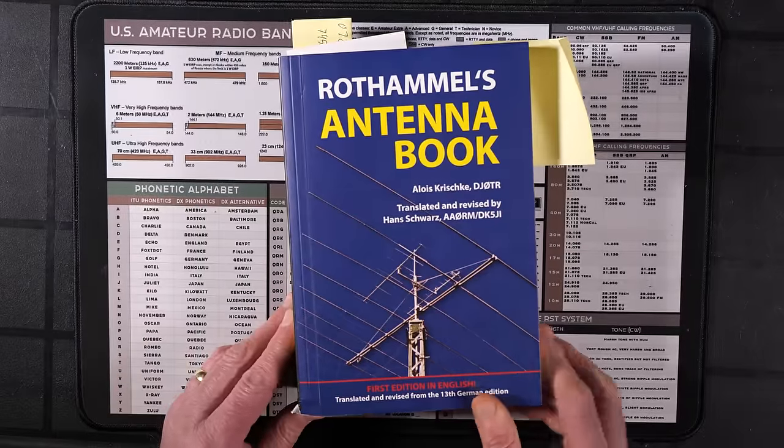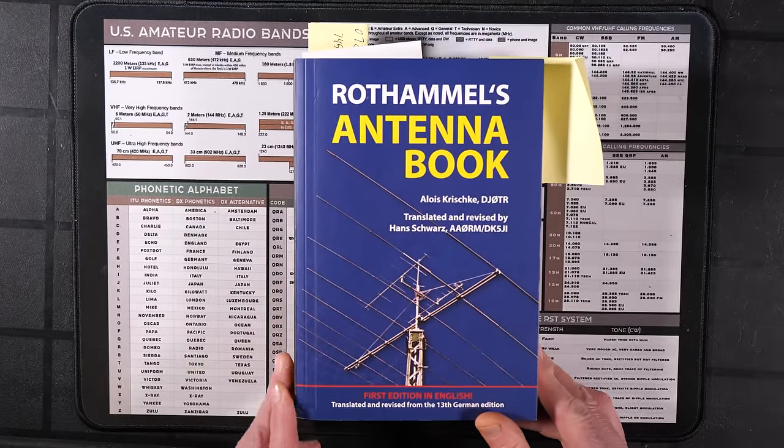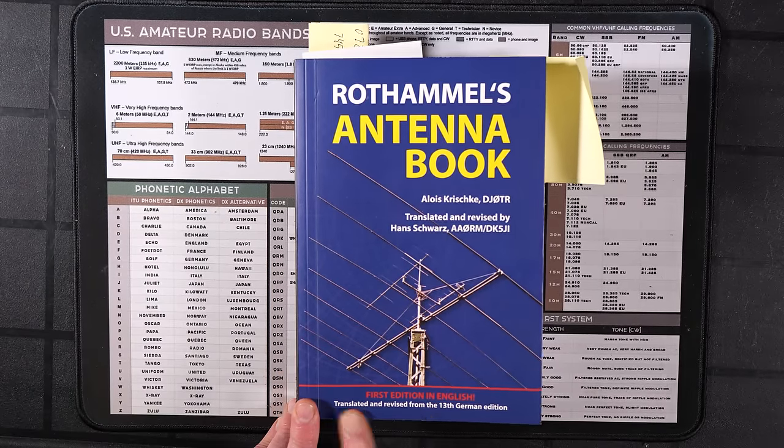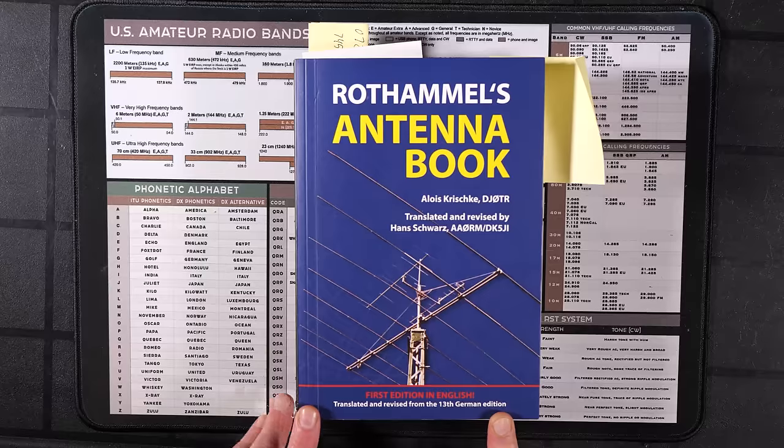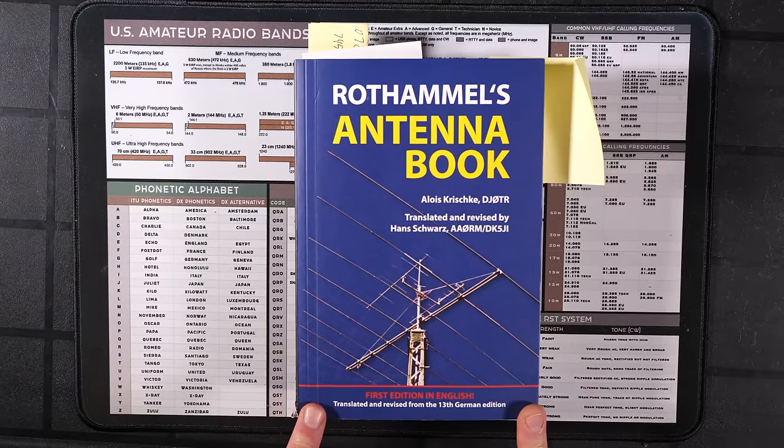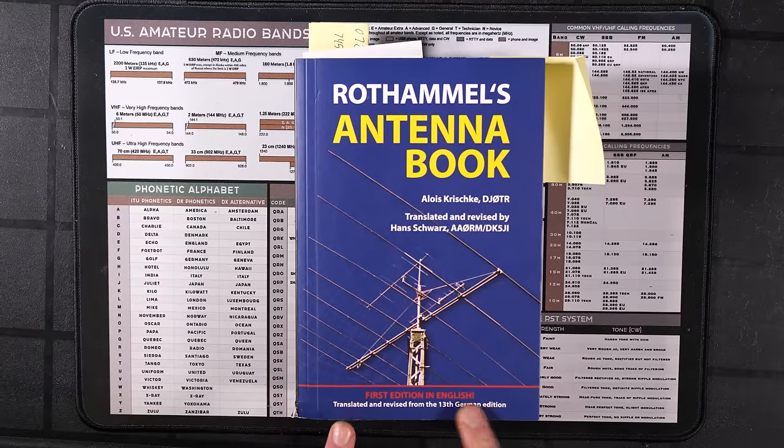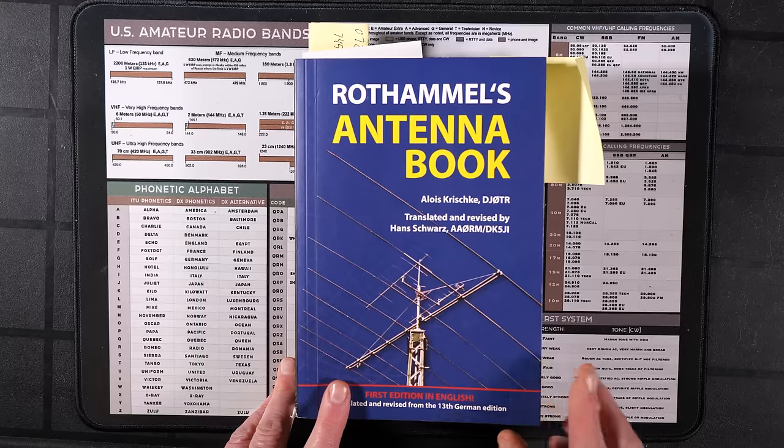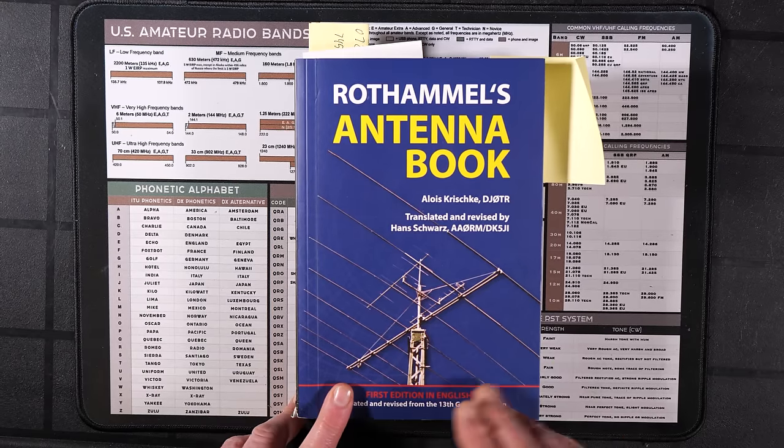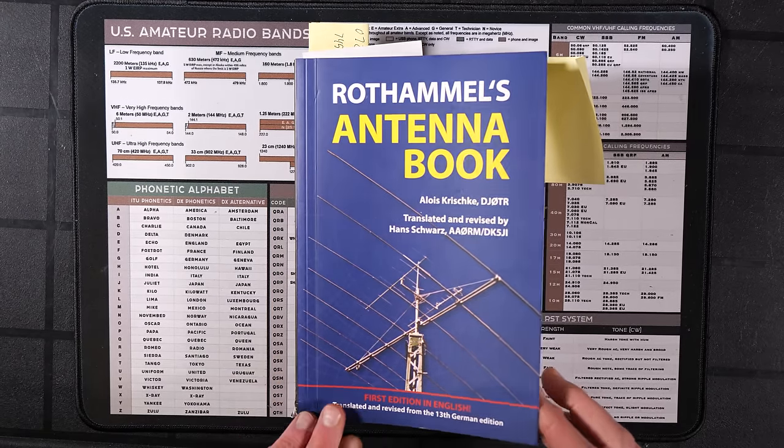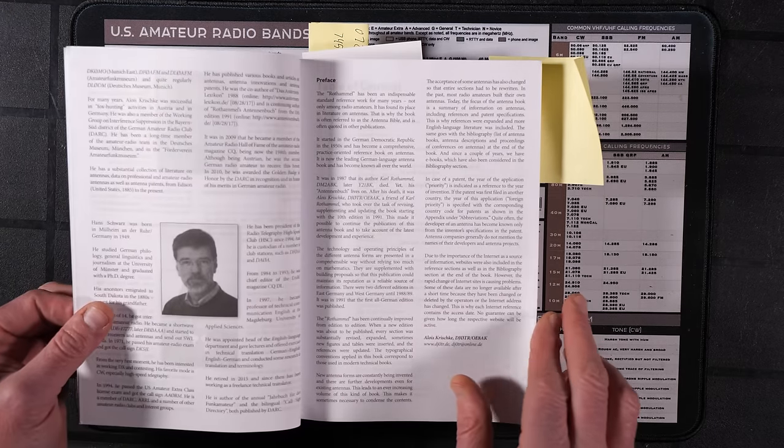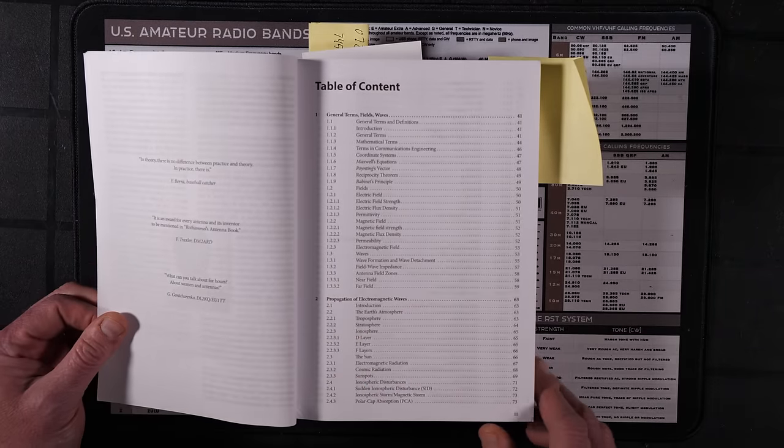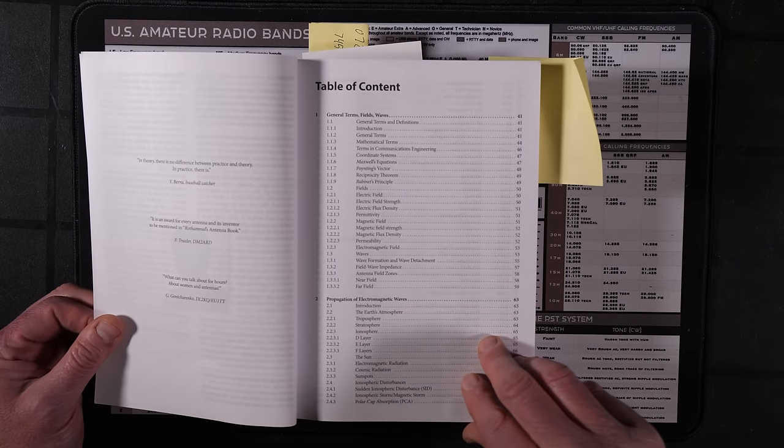Now let's kind of see how that compares to that other classic antenna book that I like. And this is Rothammel's antenna book. This is the 13th edition. This is the first edition in English. That's translated from the 13th German edition. I think this came out in 2019 maybe. And the 13th edition came out in 2013. So there is a little bit of a gap between the latest German edition and the first English edition. Rothammel's has been out since I think the 1950s, according to the preface.